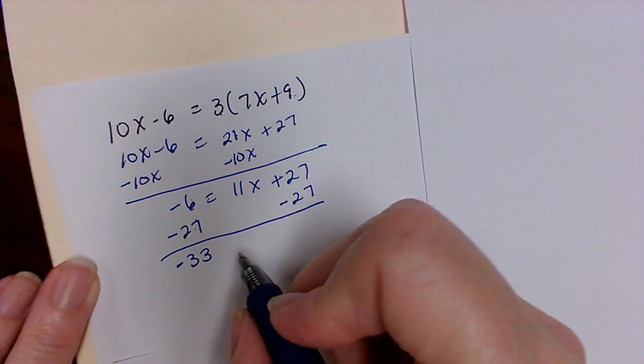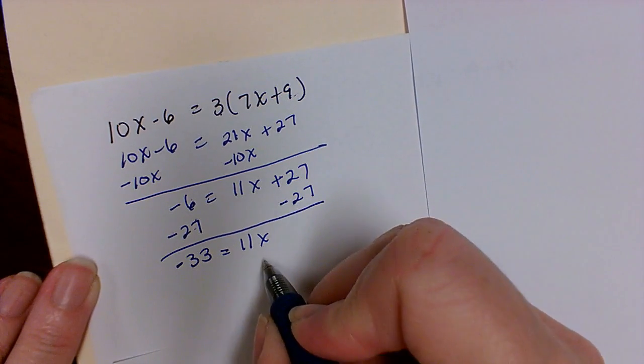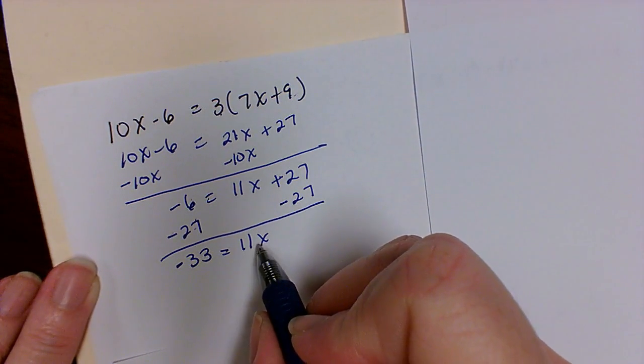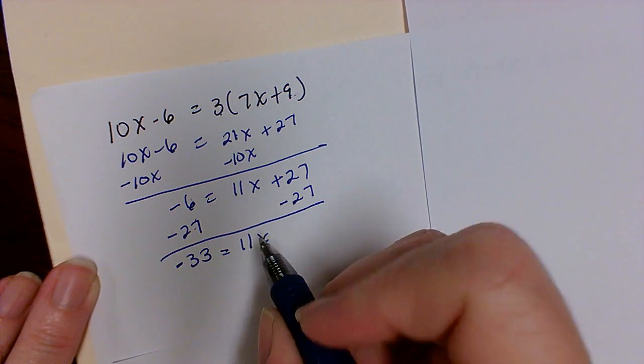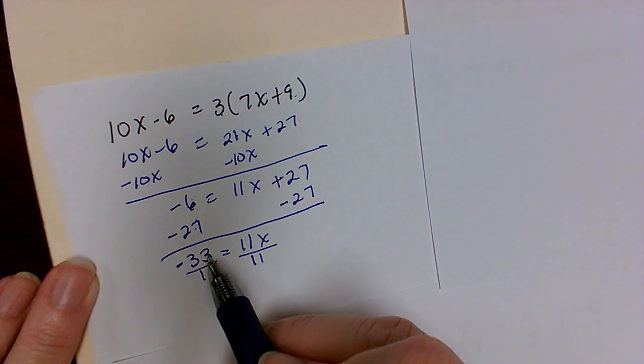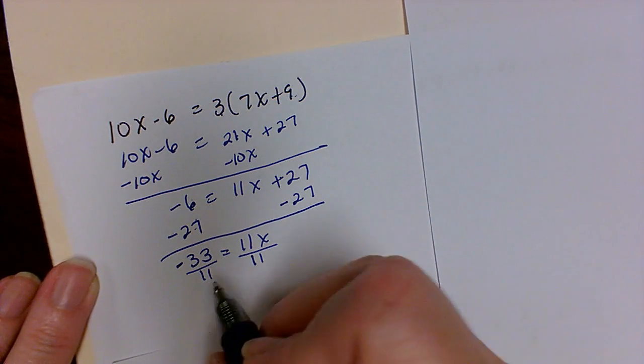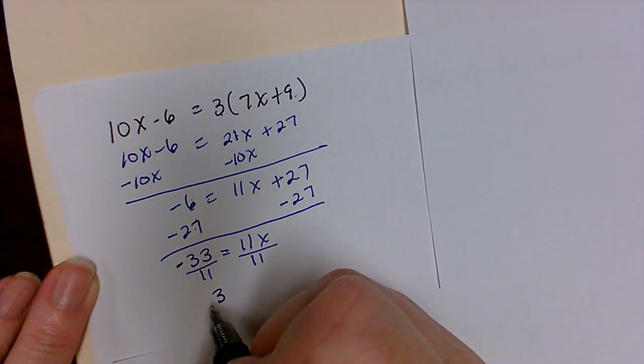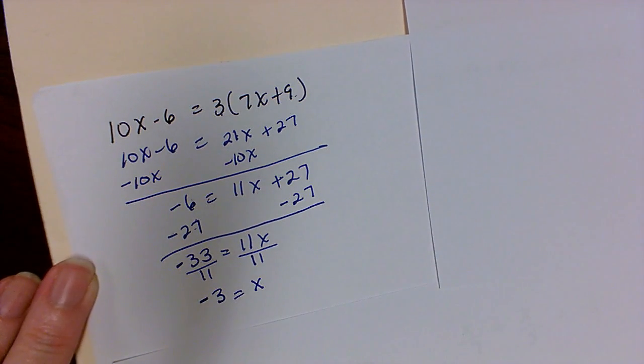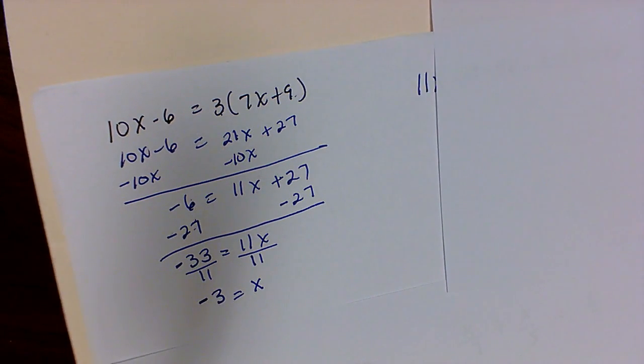Keeping the sign will be negative is equal to 11x. Now I need to get x still by itself. So what's happening here is I'm multiplying by 11, so I'm going to divide by 11. So 33 divided by 11 is 3, keeping my negative sign, is equal to x. So that's the first one.